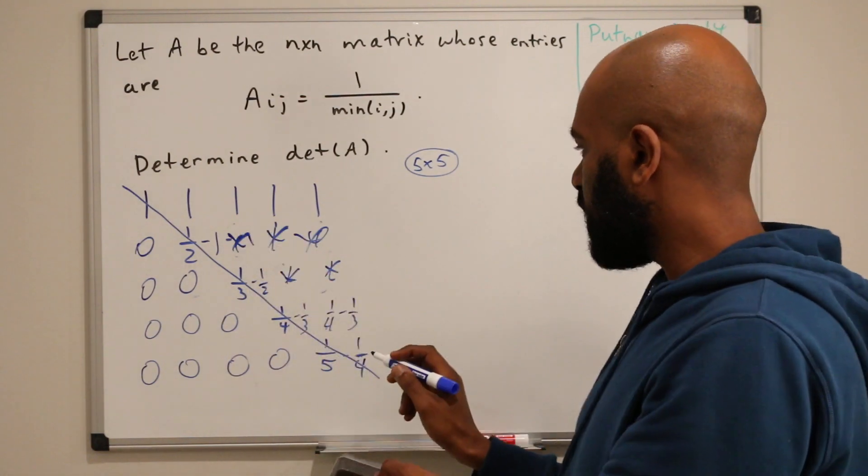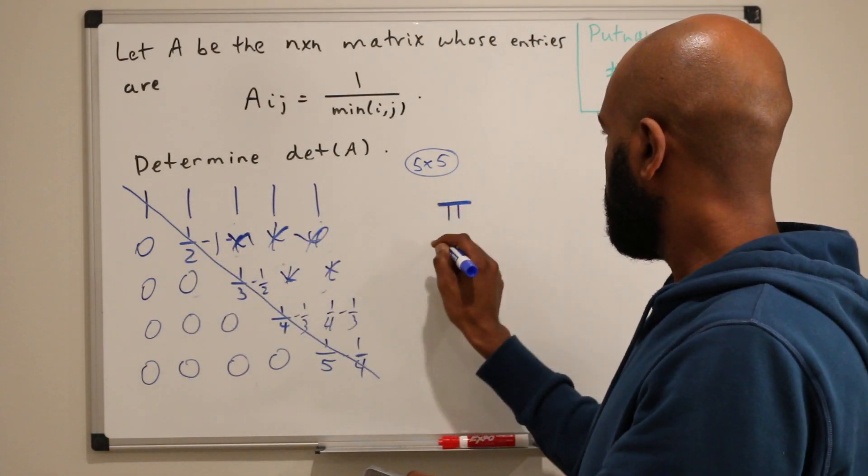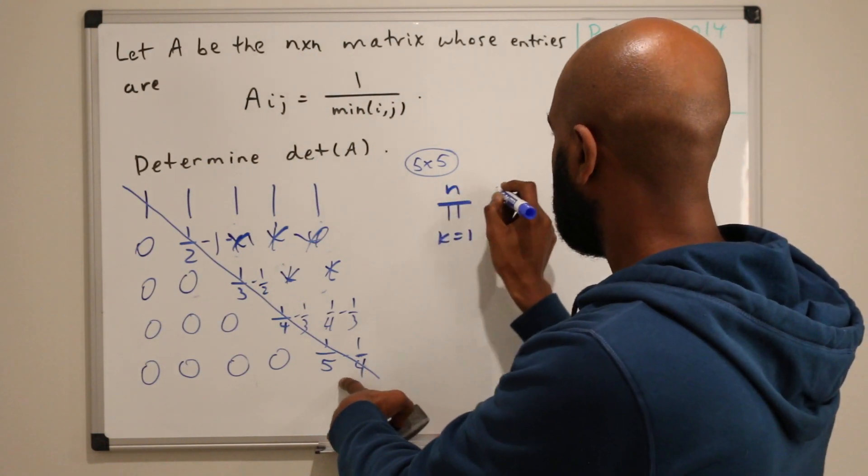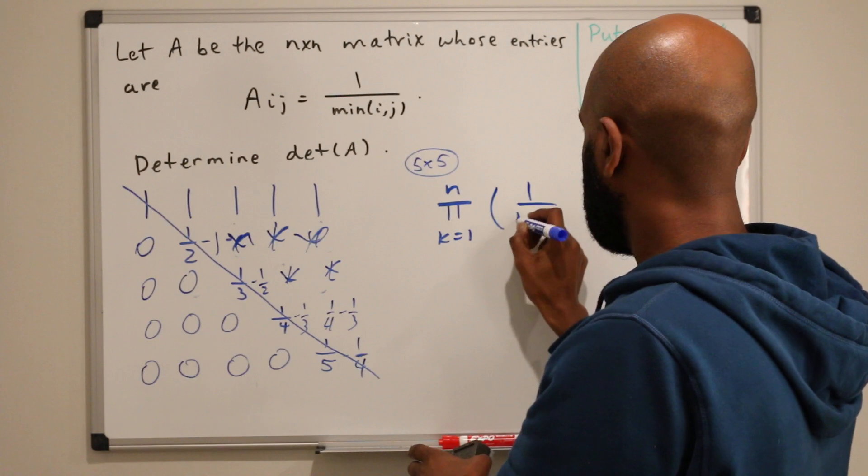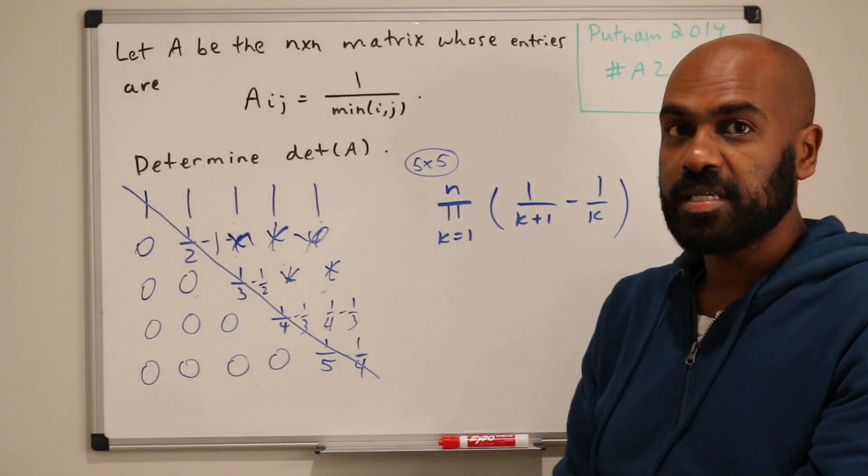So in general we get something like the product k equals 1 to n, 1 over k plus 1 minus 1 over k. And there it is.